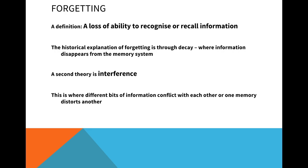Generally, the initial theory of forgetting is through decay, which harks back to the multi-store model. Decay would be when in the short-term memory you've gone over the 30-second duration or surpassed the nine-chunk capacity — the rest of the information decays and drops out of the memory system. But that's fairly limited; it only really takes account of short-term memory. What about when things go into long-term? The multi-store model would say things in long-term memory are always there. But we know that things might be there and you still might not be able to recall them.